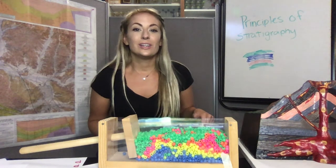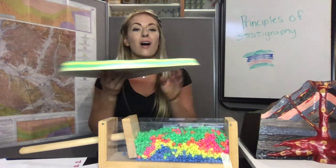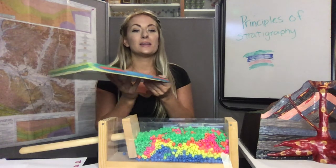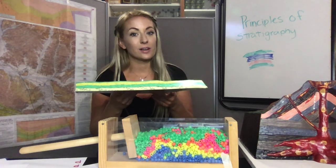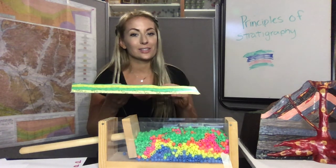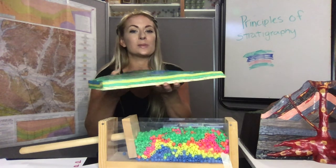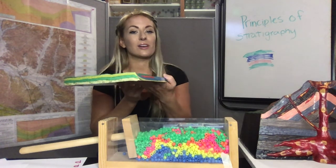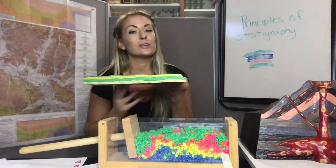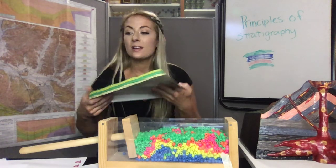Stratigraphic columns, geologic maps, and block models all depict beds or layers of rock material — single layers called a bed, in groups called stratigraphic columns, or you can refer to the group of layers as strata.